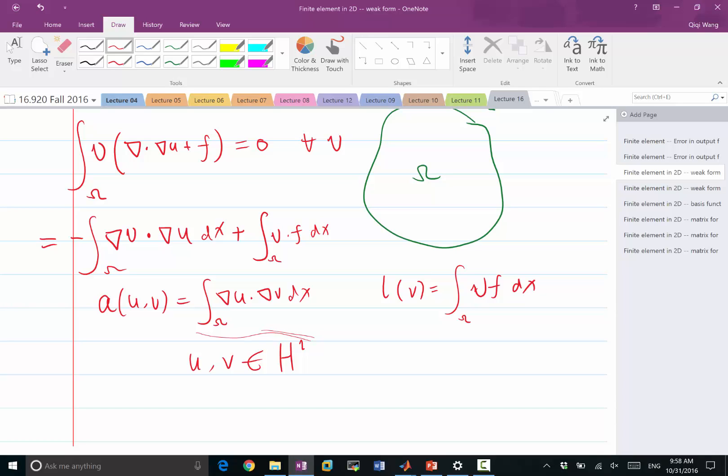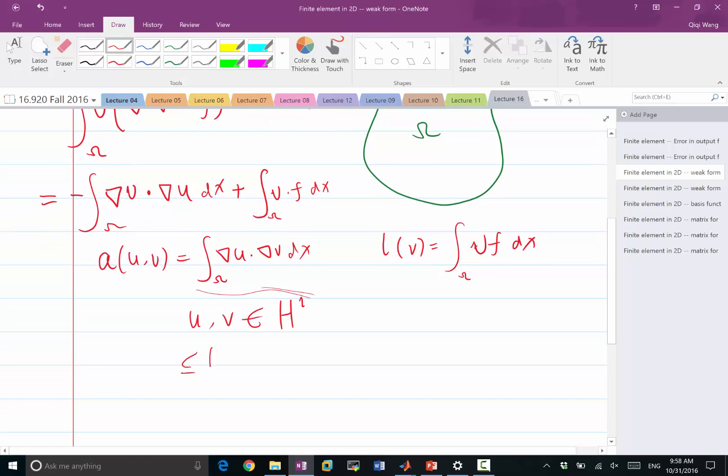If I have the derivatives to be square integrable, then I can use Cauchy-Schwarz inequality to guarantee that the weak form is going to be finite. The integral of the product of the gradient is less than or equal to the integral of grad u dot grad u to the half times the integral of grad v dot grad v to the half. If each of these are bounded by the definition of the Sobolev norm, then my a(u,v) is bounded, also called continuous.